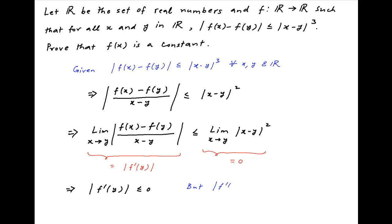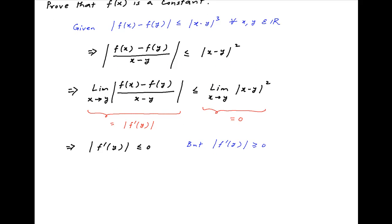However, we know that the modulus of a number is always greater than or equal to 0. Therefore, modulus of f dash y is greater than or equal to 0. These two conditions can be satisfied together only when modulus of f dash y is equal to 0, which is possible only when f is a constant, which is the required answer.